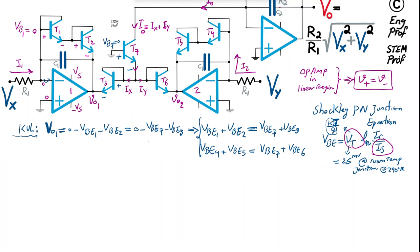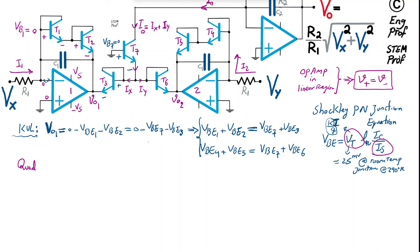Many matched transistor packages contain at most four transistors (quad transistor package). Analog Devices and OnSemi both offer such packages. If limited to quad packages, we can place four transistors in one package and three in a second package.